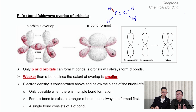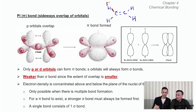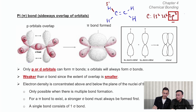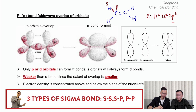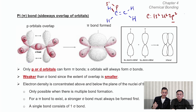To determine the orbitals involved in forming the bond, write the electronic configuration of the atoms involved. For hydrogen: 1s1. Carbon has six electrons: 1s2, 2s2, 2p2. Focus on the outermost orbital — the 2p orbital. So it's the 2p orbital of carbon overlapping with the s orbital of hydrogen: an sp orbital overlap, an sp-sigma overlap between carbon and H.